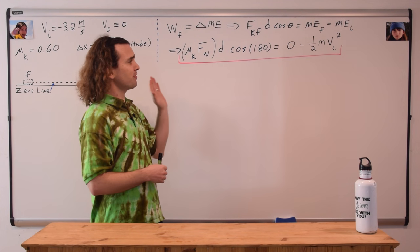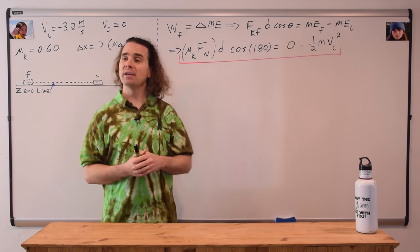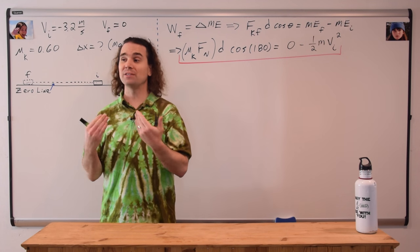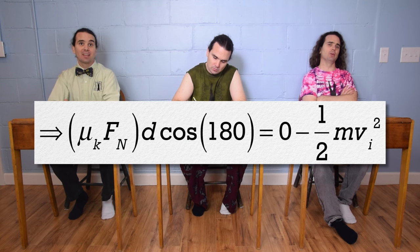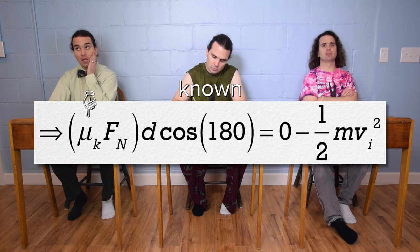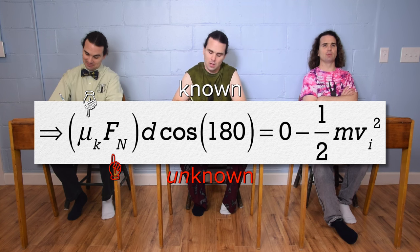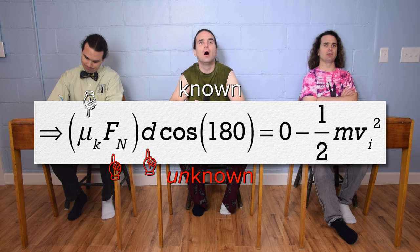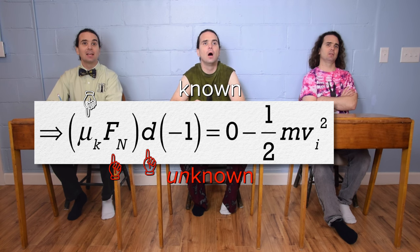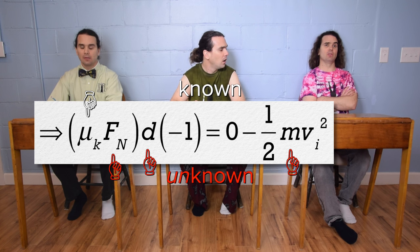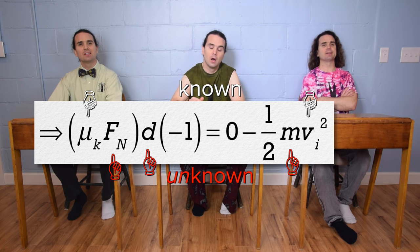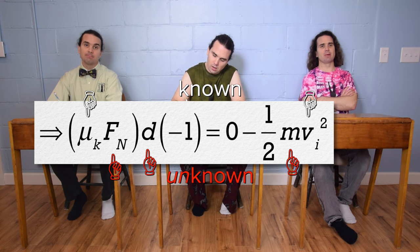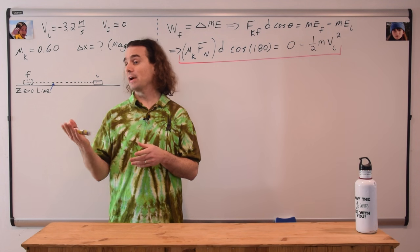Bo, please go through the equation from left to right and tell me which variables we do and do not know. We know the coefficient of kinetic friction. We don't know the force normal or the displacement. The cosine of 180 degrees is negative one. We don't know the mass of the puck, but we do know the velocity initial. We need to draw a free body diagram and sum the forces to solve for the force normal.